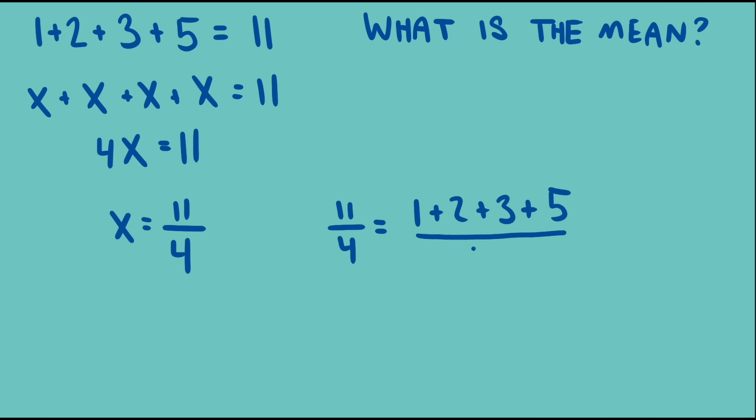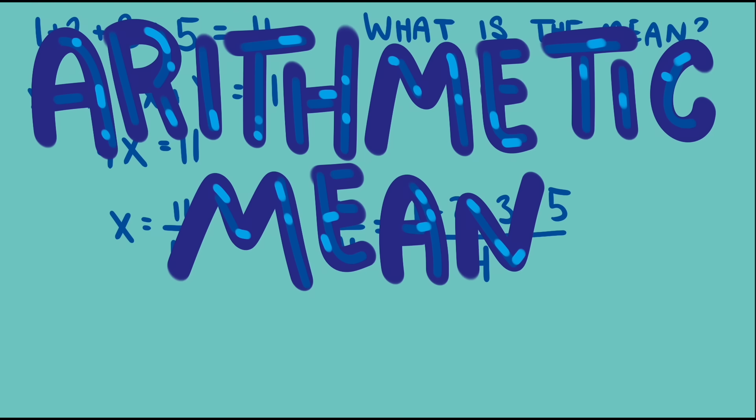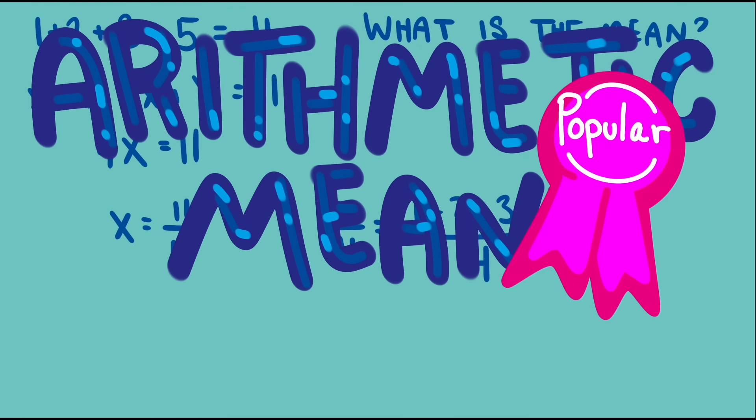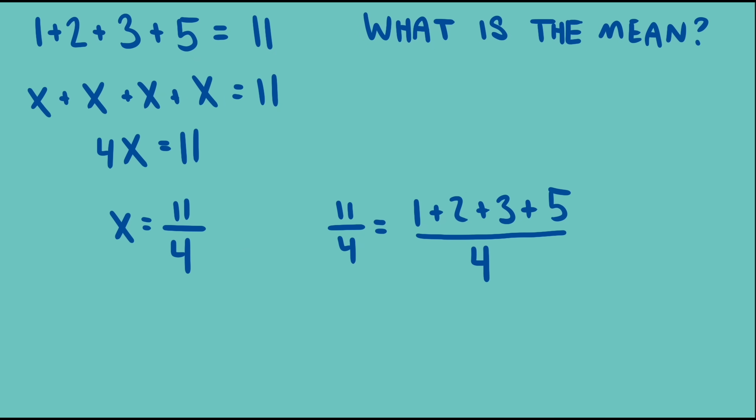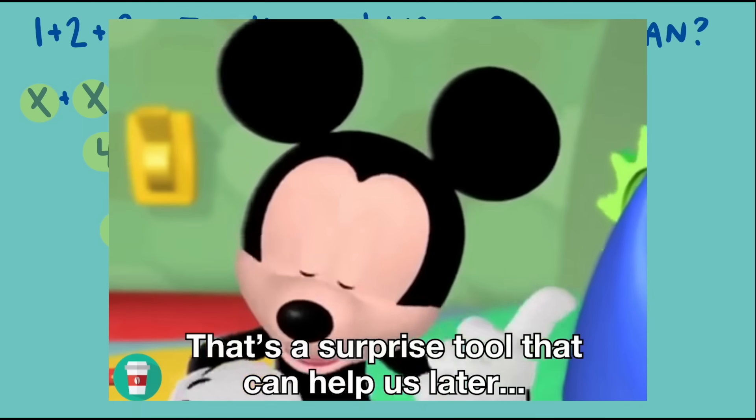When the total is the sum of the numbers, the mean is called the arithmetic mean. This is what most people think of when they think of average. Notice that the general concept of a mean gave us a way to calculate the mean for a specific total. We replaced each number by x, set the expression equal to the total, and solved. This will come in handy.